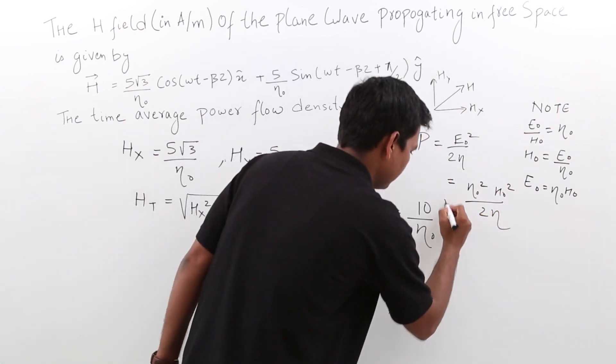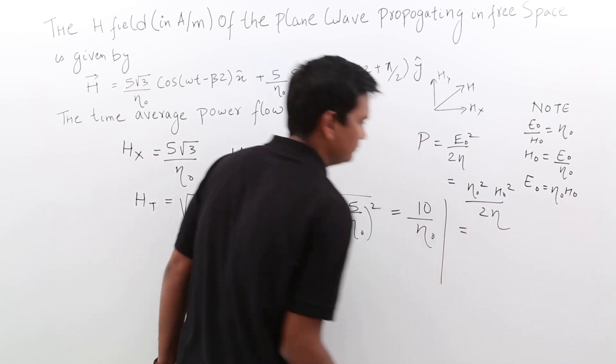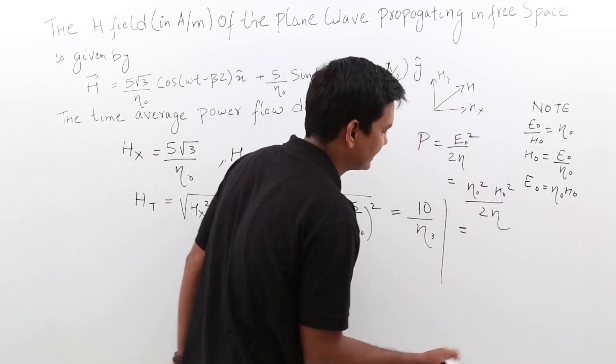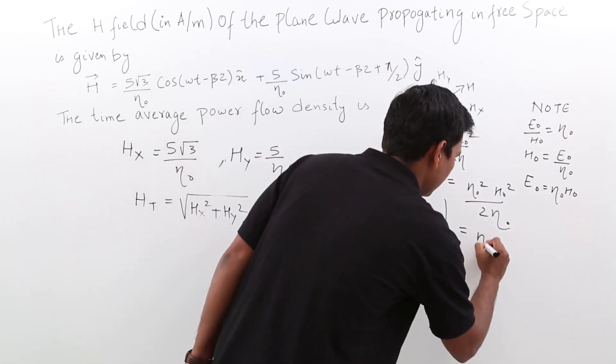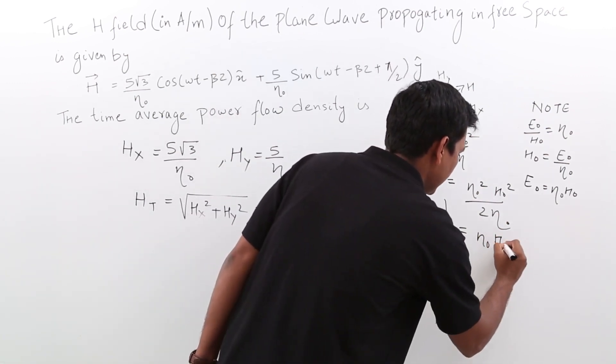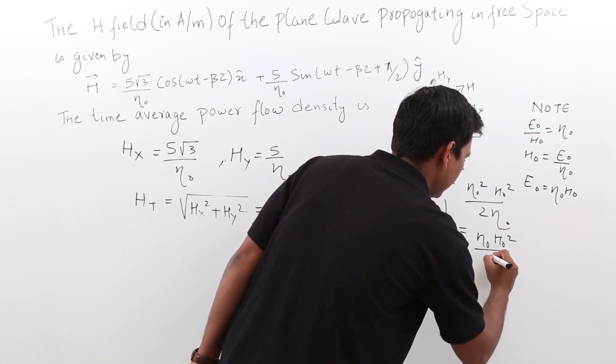If I further simplify, N naught will cancel because this is also N naught, because we are talking about free space. So this will become N naught H naught square by 2.